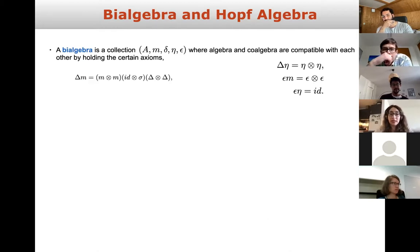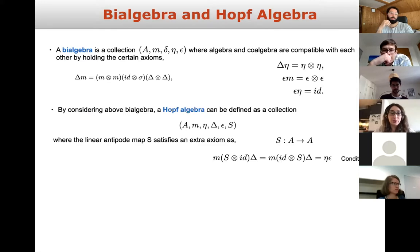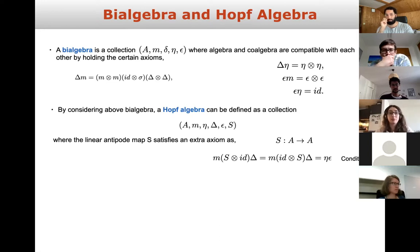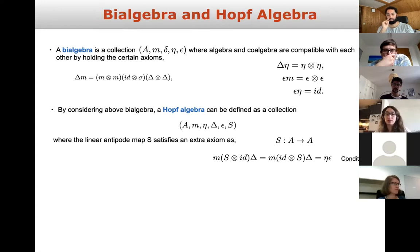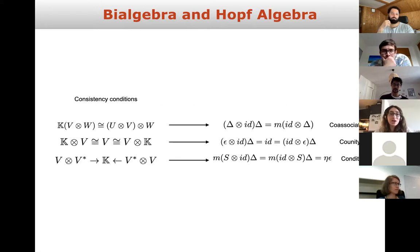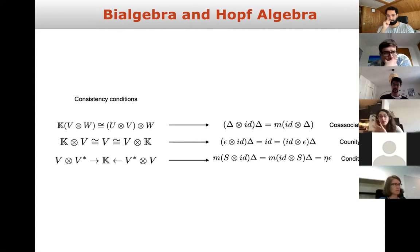A bi-algebra has the properties of both an algebra and a co-algebra, compatible with each other via certain axioms. Going one step further, a Hopf algebra is a bi-algebra with one extra map called the antipode S: A → A. There is an additional condition that must be satisfied to call a bi-algebra a Hopf algebra, written out here.